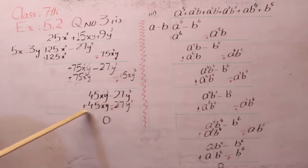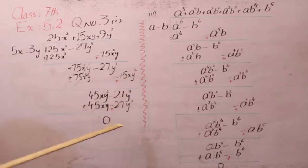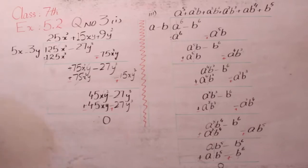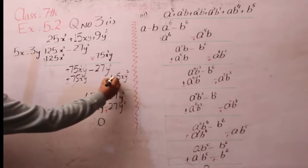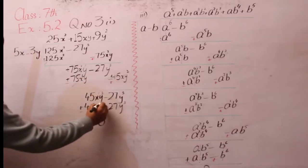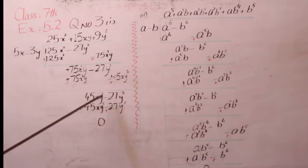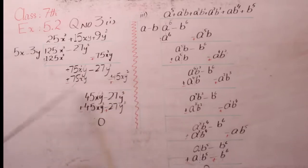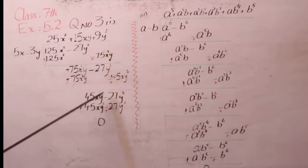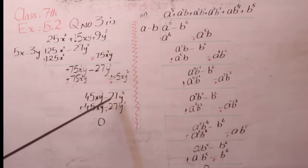तो हमने जब इनके sign change कर दिए तो दोनों values बेटा cut हो गईं और हमारा answer क्या आ गया? 0। यह था आपका first question। 45 यहां पर आ जाएगा — आप इसको यहां पर लिखेंगे तो यह cut हो जाएगा: 45 यहां पर आ गया, 90-45 बन जाएगा, x और y की 2 आ गया।